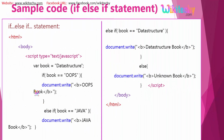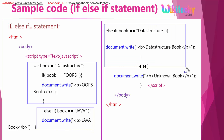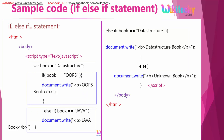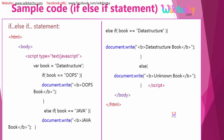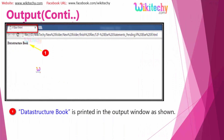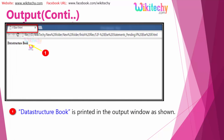Here is the condition in detail: the book is 'oops', with an if condition, else-if 'java', else-if 'data structure', and else 'unknown book'. Here is a colorful representation of how if-else-if loops work. And here is the output — the book name is 'data structure', it matched with the data structure condition, and you get the output 'data structure book'.